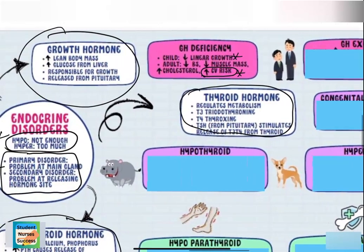In adults who have growth hormone deficiency, we may actually replace growth hormone to reduce their cardiovascular risk factors. Remember, growth hormone increases lean body mass, so not enough will actually decrease muscle mass and increase cardiovascular risk.